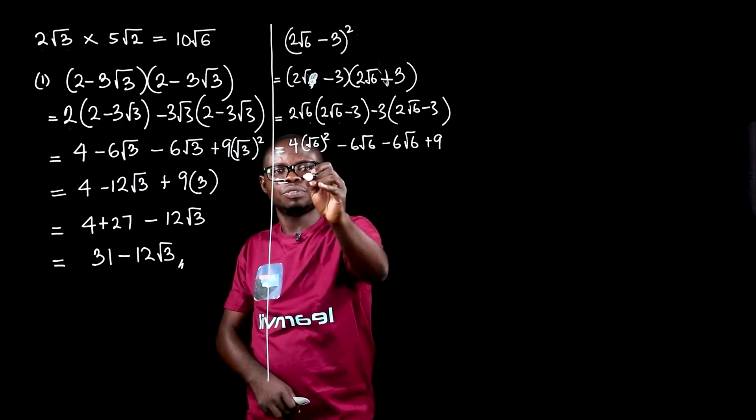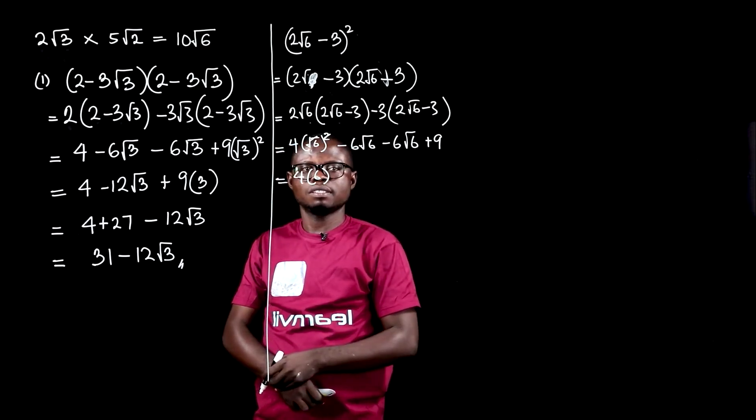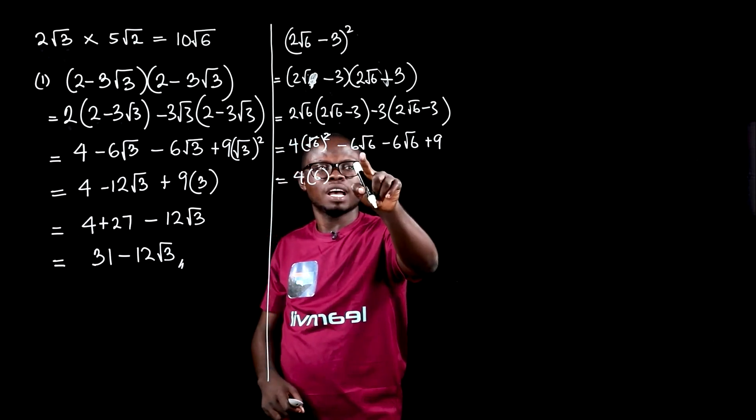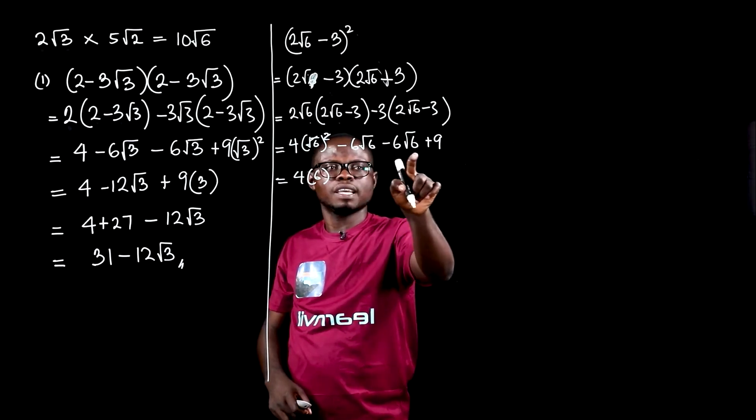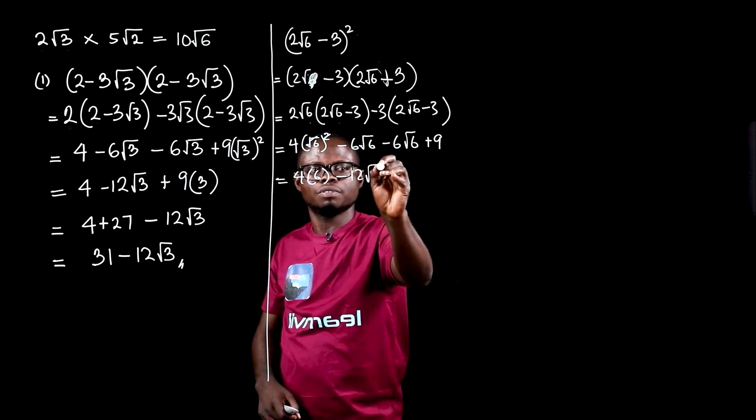This reduces to 4 times 6, because root 6 takes this. Then we have like surds here. Root 6 root 6, and that is minus 12 root 6, then plus 9.